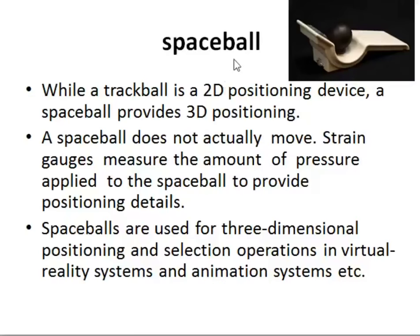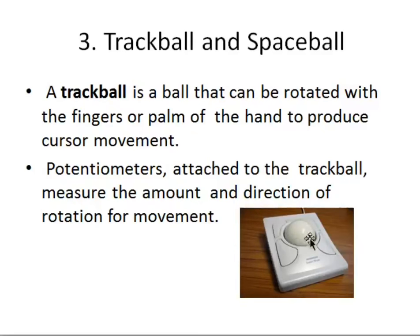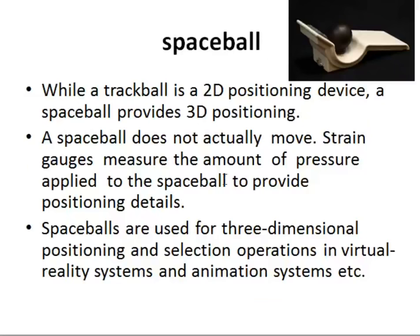Now let's look at spaceball. While a trackball is a 2D positioning device, a spaceball provides 3D positioning — six directions in 3D. A spaceball does not actually move. Strain gauges measure the amount of pressure applied to the spaceball to provide positioning details — how much pressure is applied and in which direction is measured using the strain gauge.